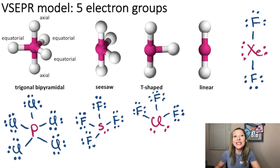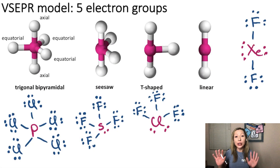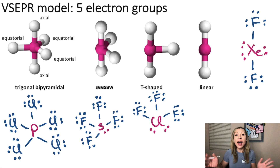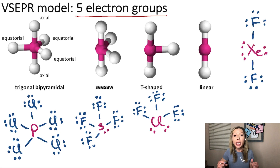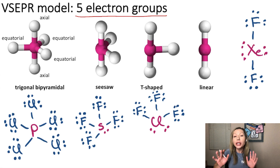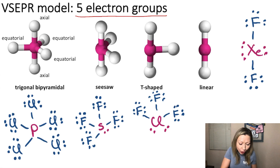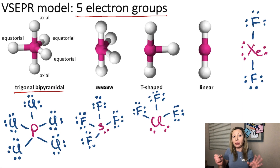Hello, guys. Let's talk more about molecular shapes. Let's see what happens when we have five electron groups around the central atom. In that case, we are going to get a shape that is called trigonal bipyramidal.